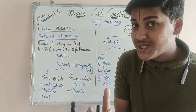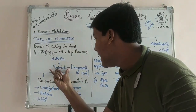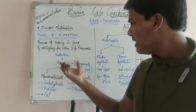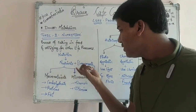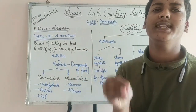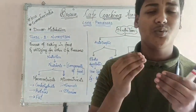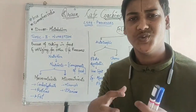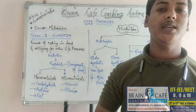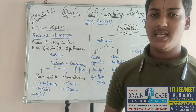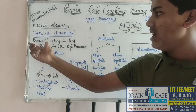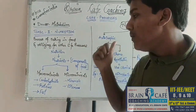The substances that we take in are called nutrients, and nutrients are present in food. The nutrient components of food are: carbohydrates, proteins, fats, minerals, and vitamins. These are all nutrients, and they are responsible for the maintenance and survival of your body. Nutrition is the process of taking in food and utilizing it for other life processes.